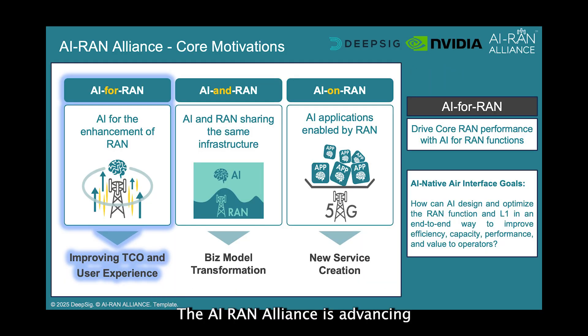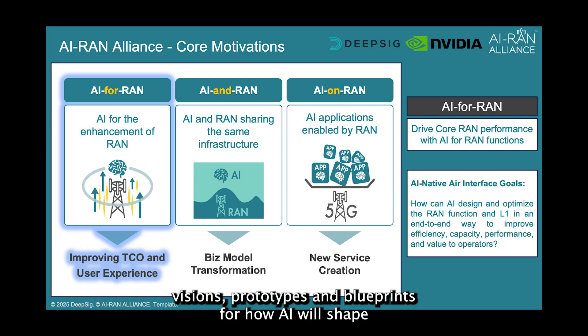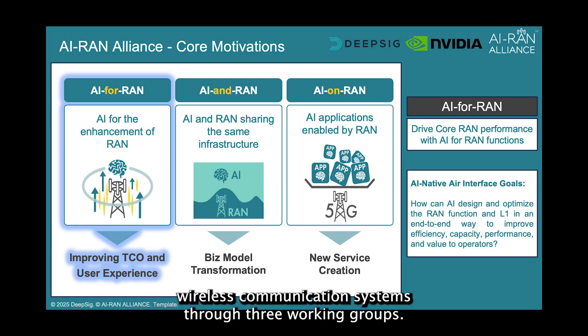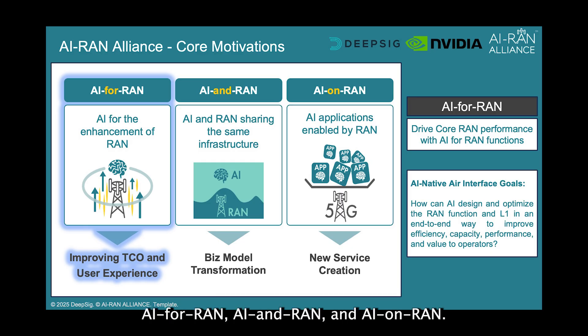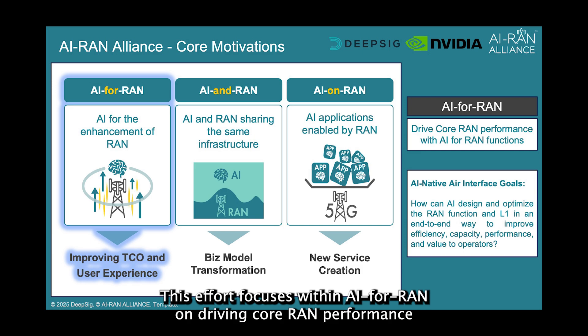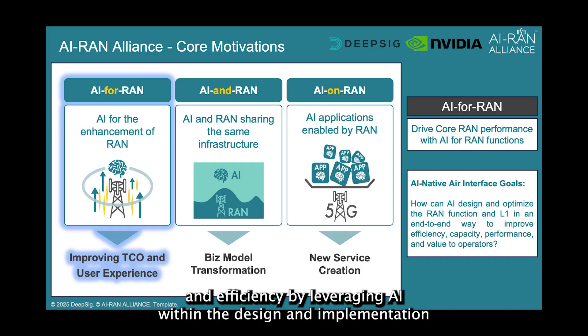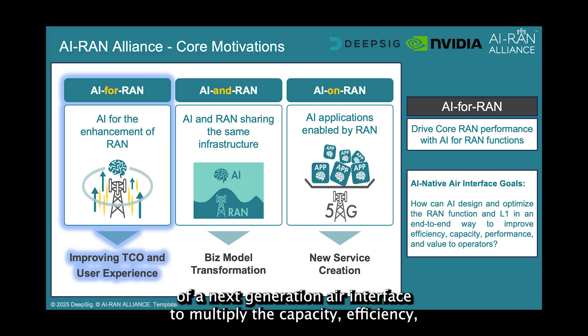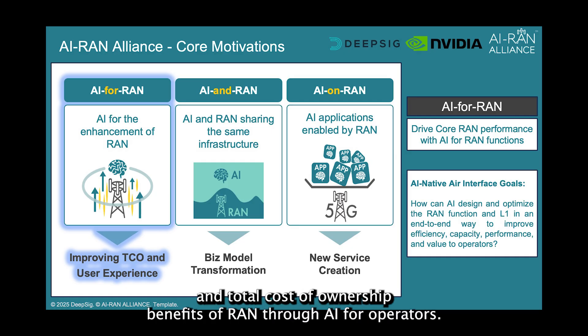The AI-RAN Alliance is advancing visions, prototypes, and blueprints for how AI will shape wireless communication systems through three working groups: AI for RAN, AI and RAN, and AI on RAN. This effort focuses within AI for RAN on driving core RAN performance and efficiency, by leveraging AI within the design and implementation of a next-generation air interface to multiply the capacity, efficiency, and total cost-of-ownership benefits of RAN through AI for operators.